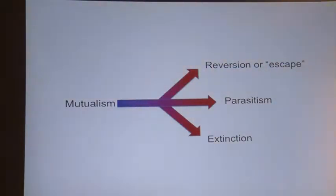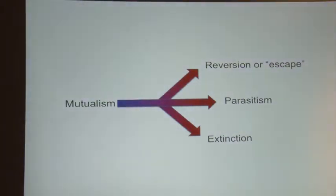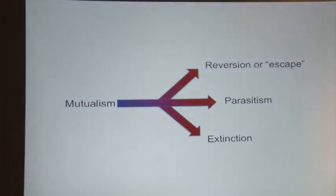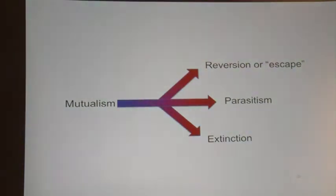Mutualisms are considered to be relatively unstable — theoretically, we expect them to be short-lived and to break down. The main categories in which they break down are through cheating, which often leads to parasitism; through reversion or escape, when mutualist partners simply stop interacting; or through extinction events. Generally, parasitism is the main way mutualisms break down.